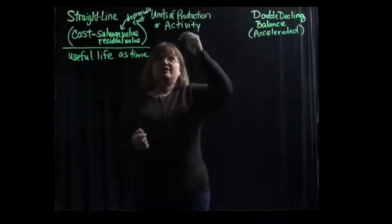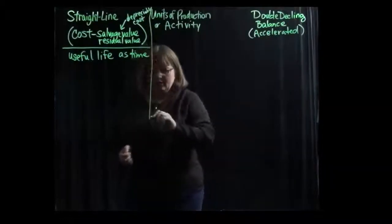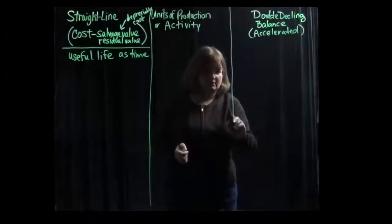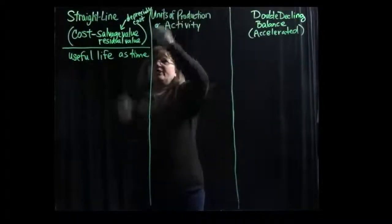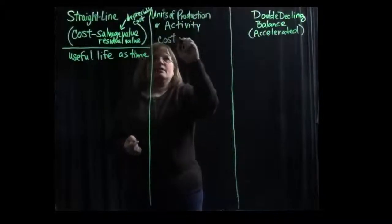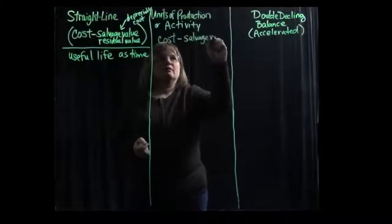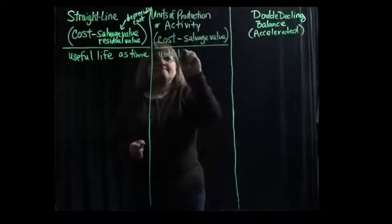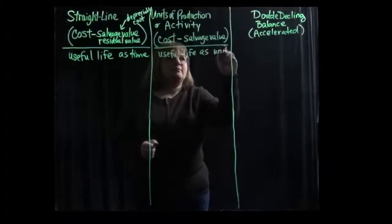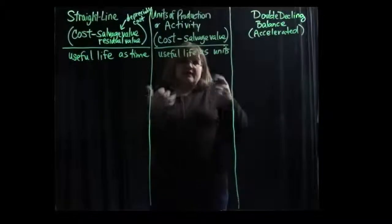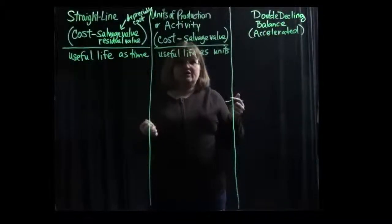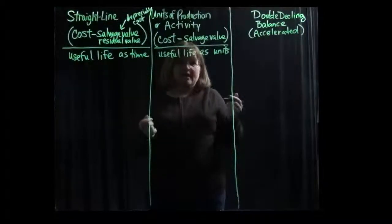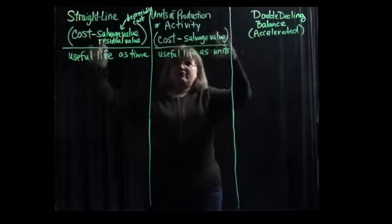The formula for the units of production or activity method has the same basic formula — the depreciable cost divided by the life — but this time the useful life is some type of a productive unit. If it was a vehicle, then we would use miles as the basis for the depreciation. If it's production equipment, we would use the number of units of product produced by that equipment.